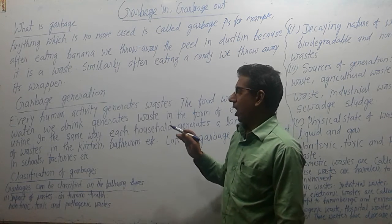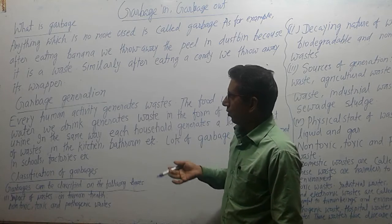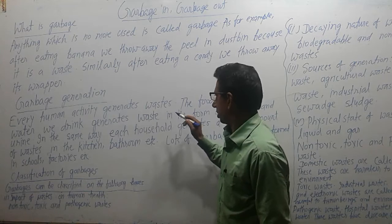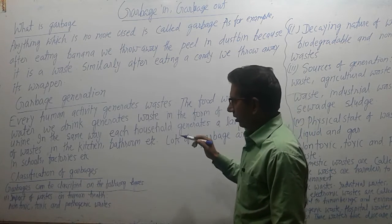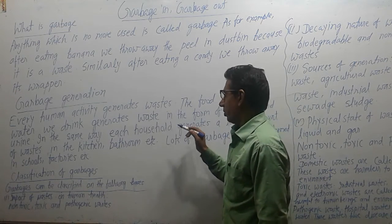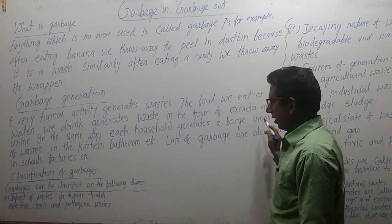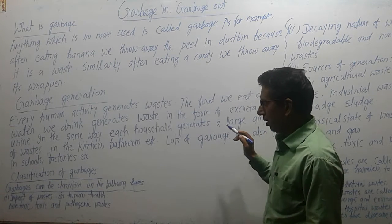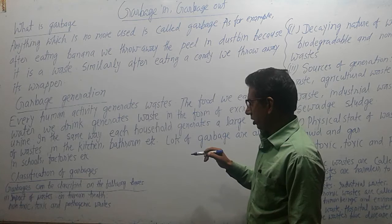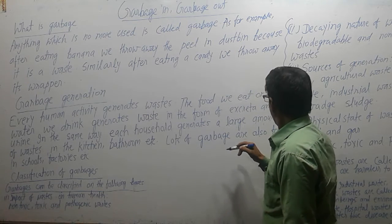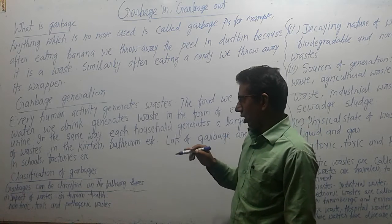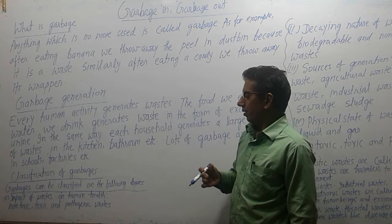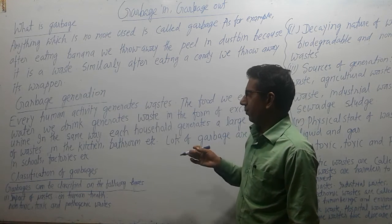Now, we have to know about garbage generation — that means, how is garbage produced? Every human activity generates waste. The food we eat or the water we drink generates waste in the form of excreta and urine. In the same way, each household generates a large amount of waste in the kitchen, bathroom, etc. Lots of garbage are also formed in schools, factories, etc. That means, garbage is produced in every field.